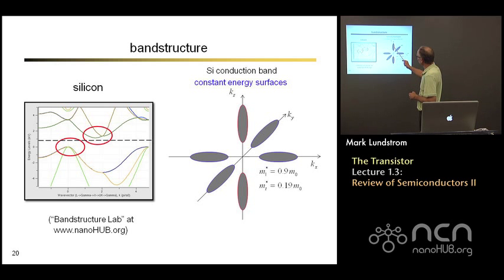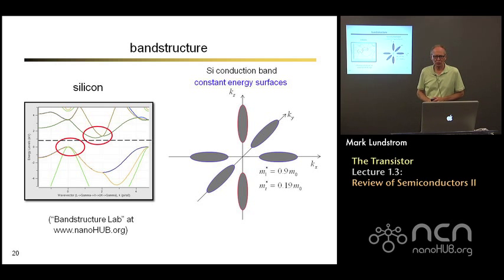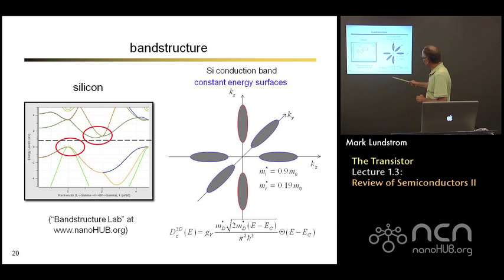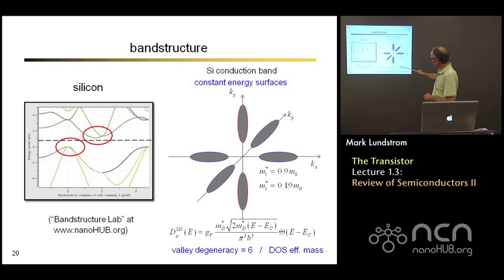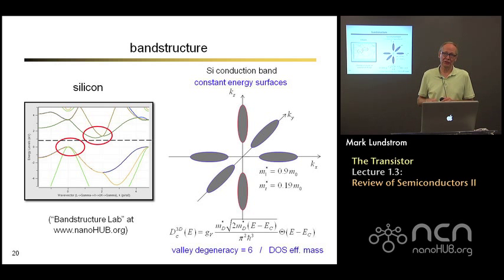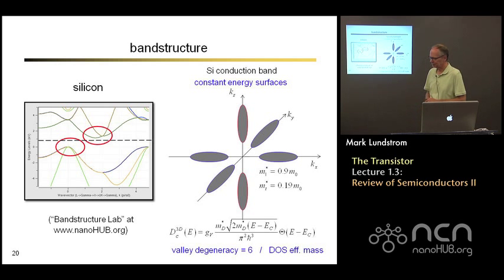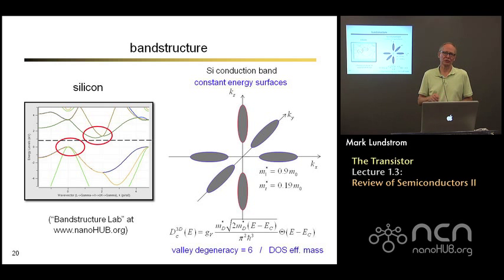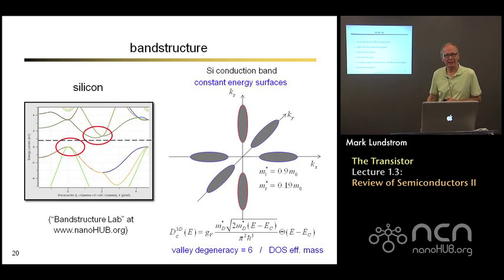There can be many equivalent valleys in k-space. For silicon's conduction band there are six equivalent valleys, so when computing densities of states we must include a valley degeneracy factor G_V = 6 for electrons. We multiply the simple parabolic-band density-of-states expression by G_V. These are details we'll pull in from time to time, but mainly the course focuses on underlying physical concepts, which are simple to appreciate without getting into too many band-structure details.